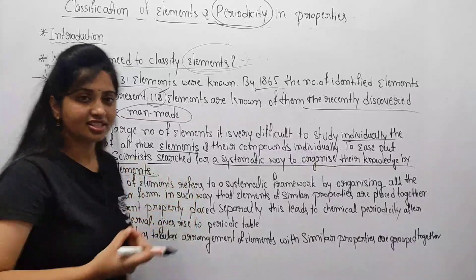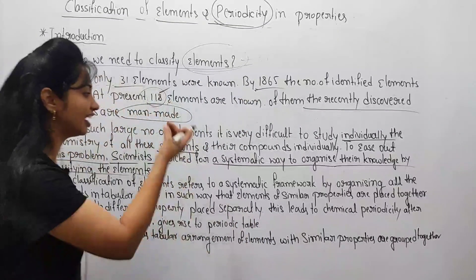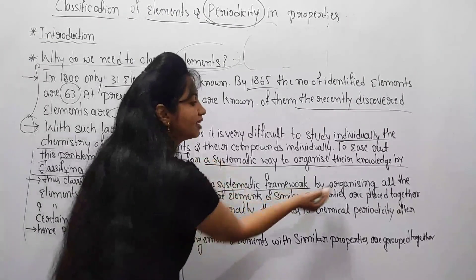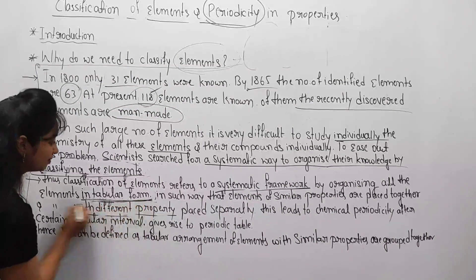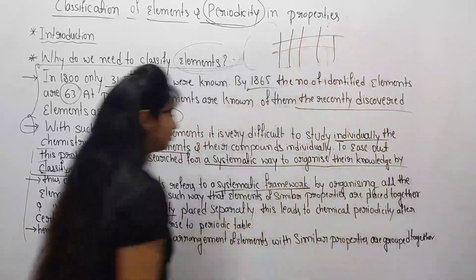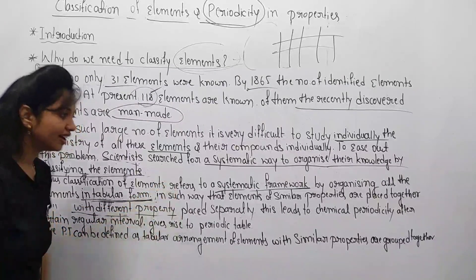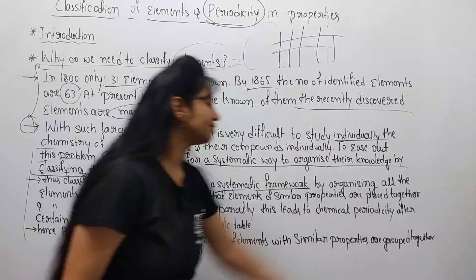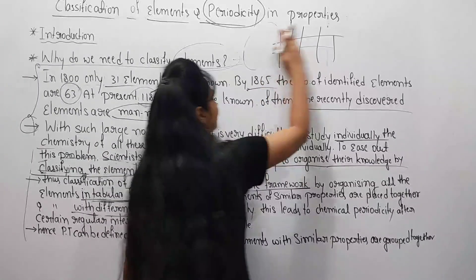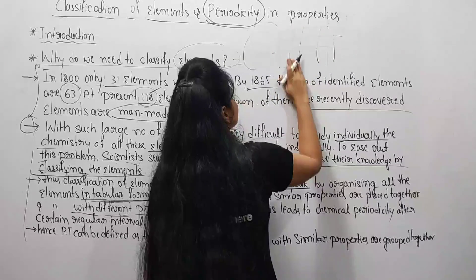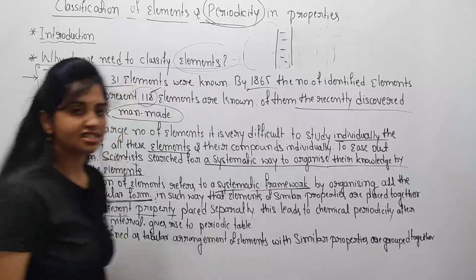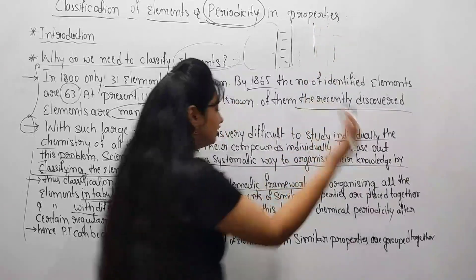Scientists gave systematic and logical ideas about the arrangement of these elements. The classification of elements refers to a systematic framework for organizing all elements in a tabular form, such that elements with similar properties are placed together and elements with different properties are placed separately — forming distinct groups based on their properties.